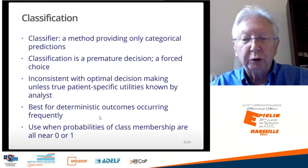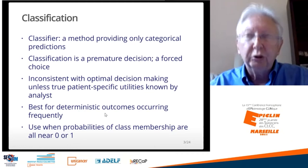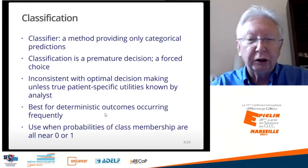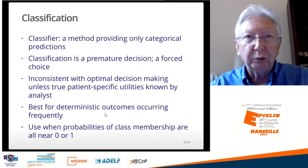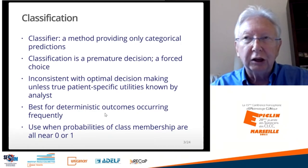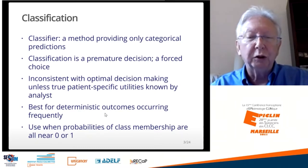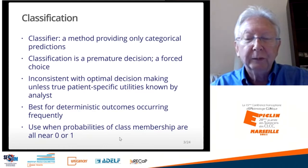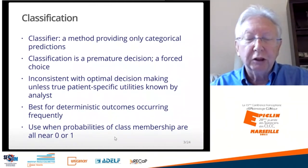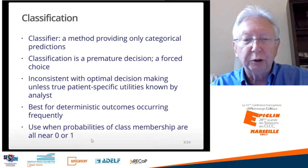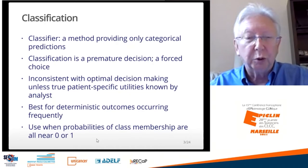So when is classification an appropriate task? It's when you have a deterministic outcome that occurs frequently. The classic examples would be recognizing letters of the alphabet, recognizing handwriting, recognizing speech, self-driving cars — any sort of visual pattern recognition, especially when you're trying to recognize something that is mainly deterministic and occurs frequently. The general way to know that classification is appropriate is if you instead developed a probability model and the probabilities were all very close to zero or one — that means you have a fairly deterministic problem, and a classifier is going to be appropriate.